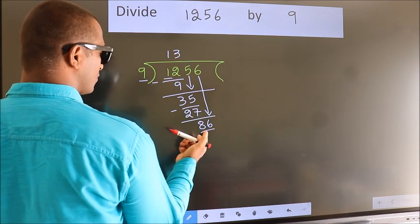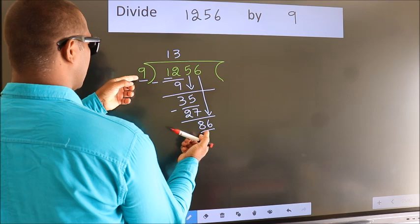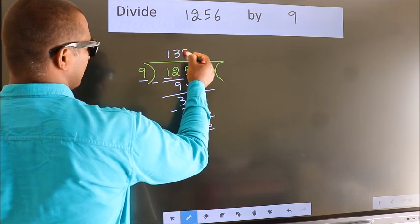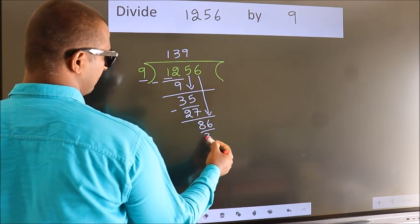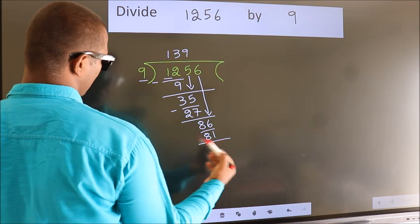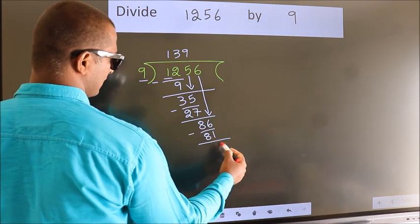A number close to 86 in the 9 table is 9 nines, 81. Now we subtract. We get 5.